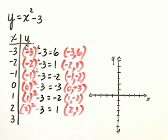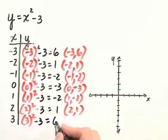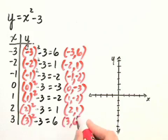And finally, we have 3 for x. So we substitute in 3 and square it. Minus 3 gives us 9 minus 3, or 6. So we have the point 3, comma 6.